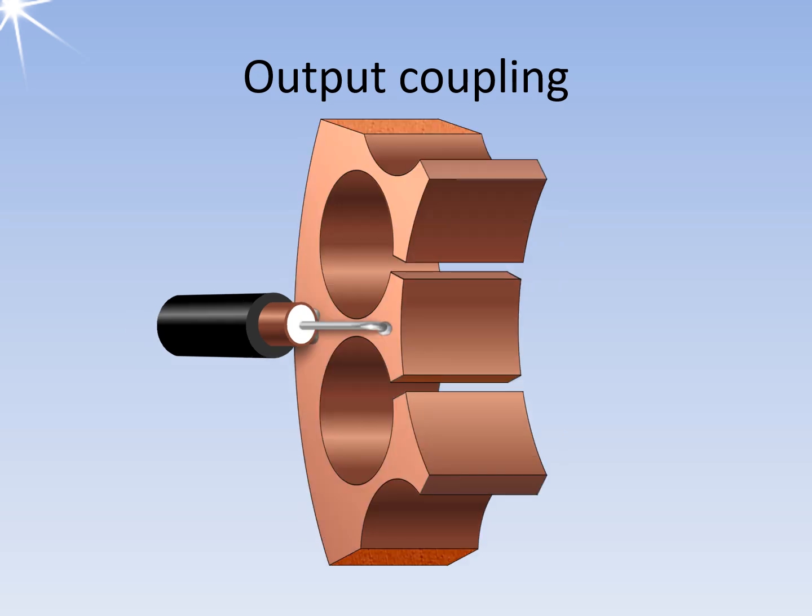However, the center conductor of the coaxial cable can also be connected directly to one of the anode segments. An RF voltage is tapped directly here. However, the center conductor of the coaxial cable can also be connected to one of the strapping rings. An RF voltage is also tapped here.